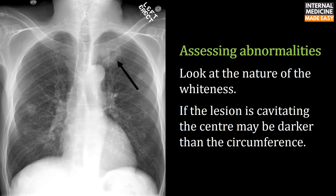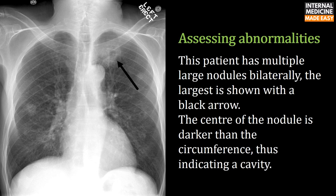Look at the nature of the whiteness. If the lesion is cavitating, the center may be darker than the circumference. This patient has multiple large nodules bilaterally; the largest is shown with a black arrow. The center of the nodule is darker than the circumference, thus indicating a cavity.